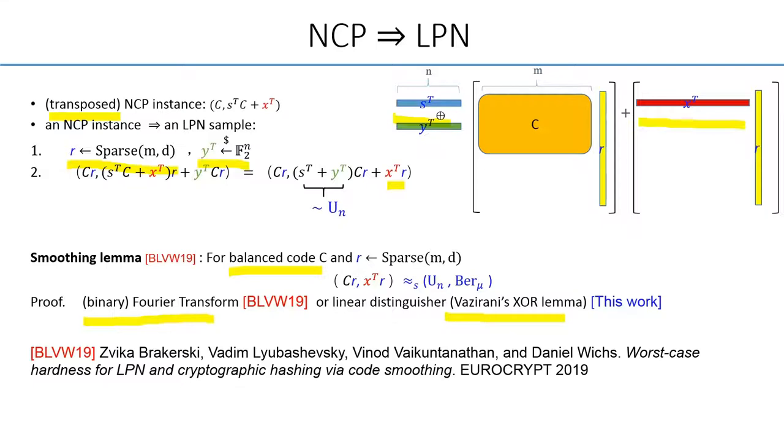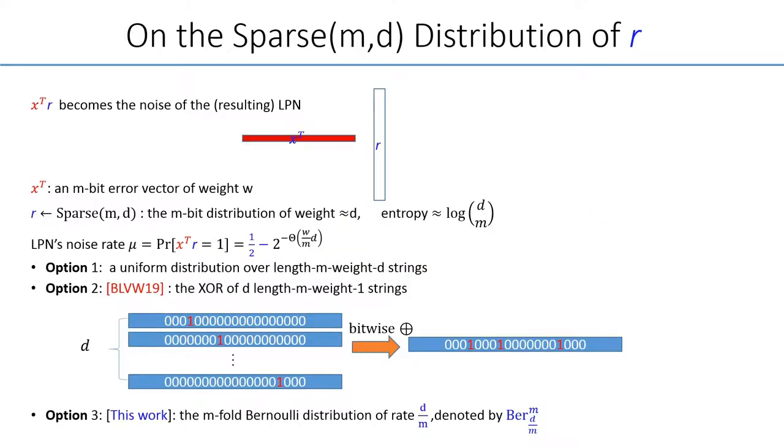I would like to elaborate a bit more about the sparse distribution that R is sampled from. So this is the distribution that has a length M and of weight roughly D. As shown previously during the reduction, X·R will become the noise of the LPN, where X is an M-bit error vector that has a fixed Hamming weight. And this results into a biased bit that has roughly 2 to the -ωD over M close to uniform.